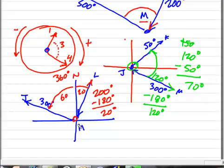So 60, in this case, 60 degrees plus 20 degrees is going to be 80 degrees, isn't it?